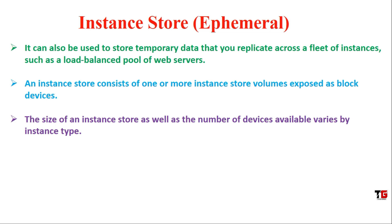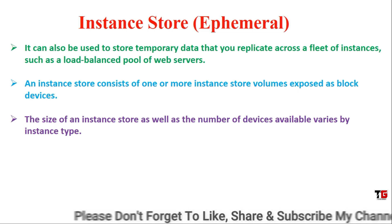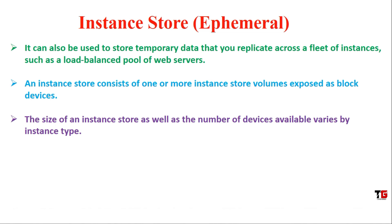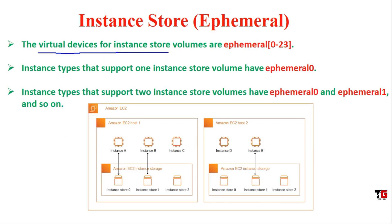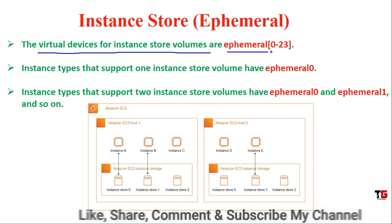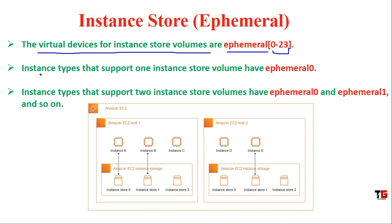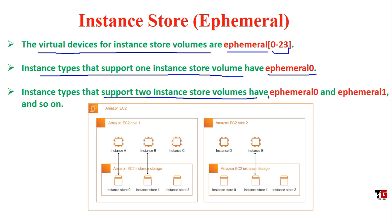Inside the Instance Store, whichever hard drives are available — for example, in some instances you can get two hard drives. The virtual devices available in Instance Store are called ephemeral. They can range from ephemeral0 to ephemeral23. If your instance type supports only one Instance Store volume, it is called ephemeral0; if two volumes are available, they are ephemeral0 and ephemeral1.